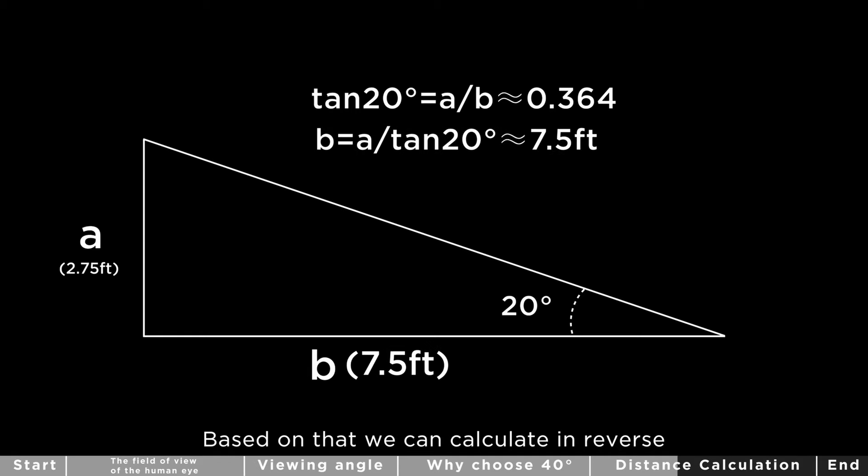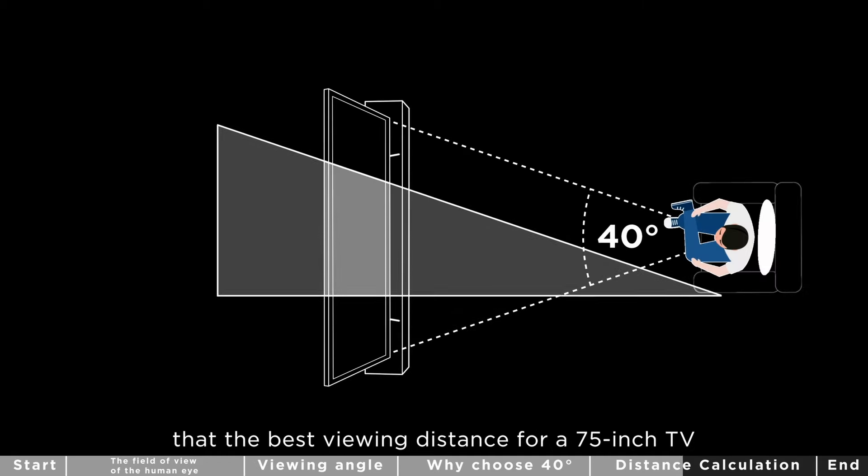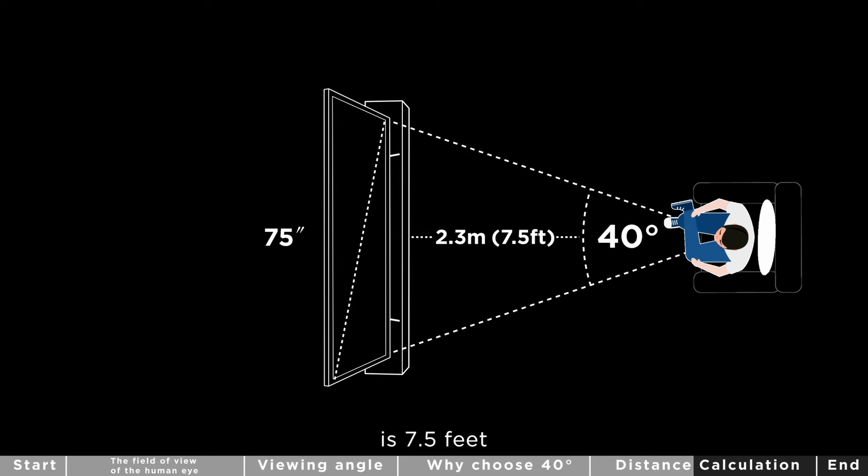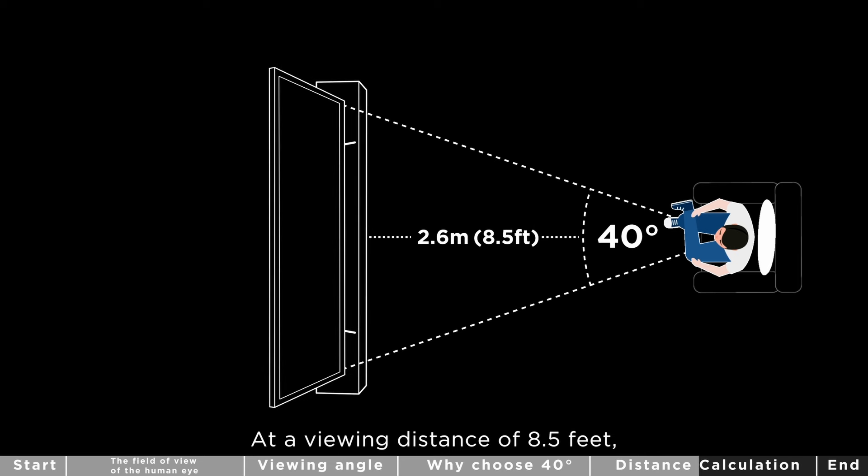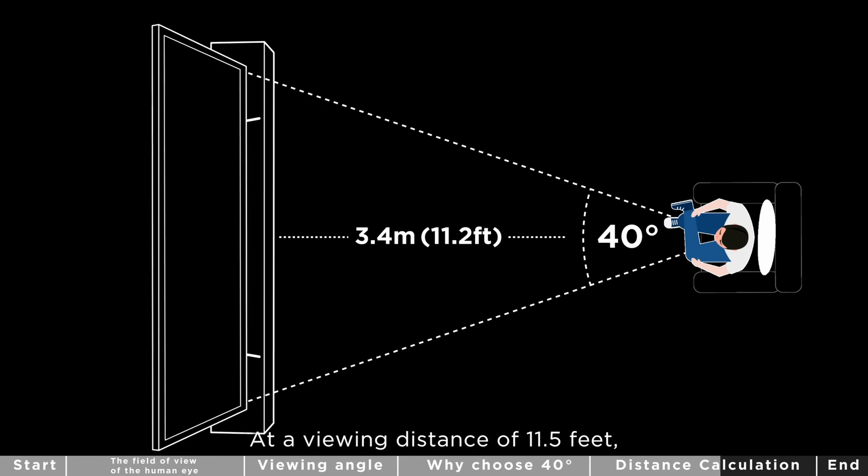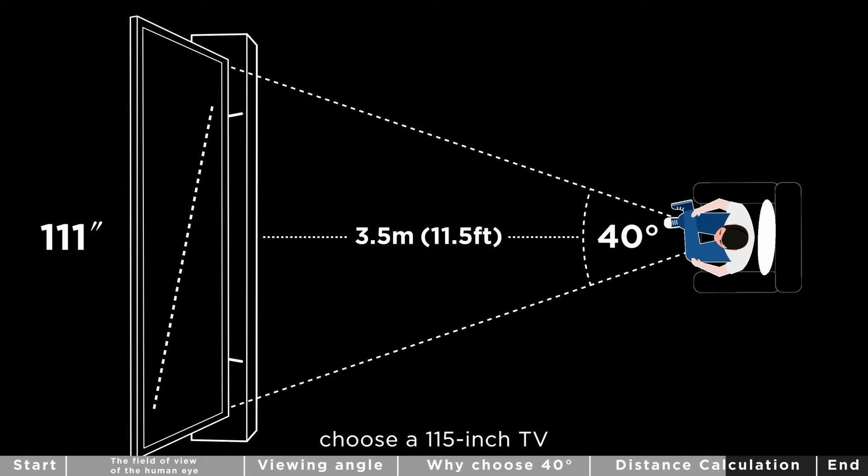Based on that, we can calculate in reverse that the best viewing distance for a 75 inch TV is 7.5 feet. At a viewing distance of 8.5 feet, choose an 85 inch TV. At a viewing distance of 9.8 feet, choose a 98 inch TV. At a viewing distance of 11.5 feet, choose a 115 inch TV.